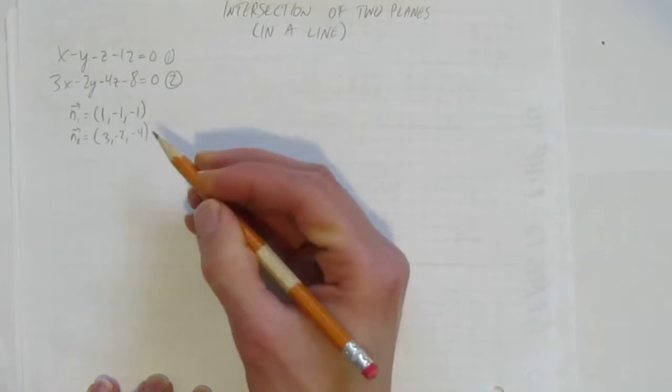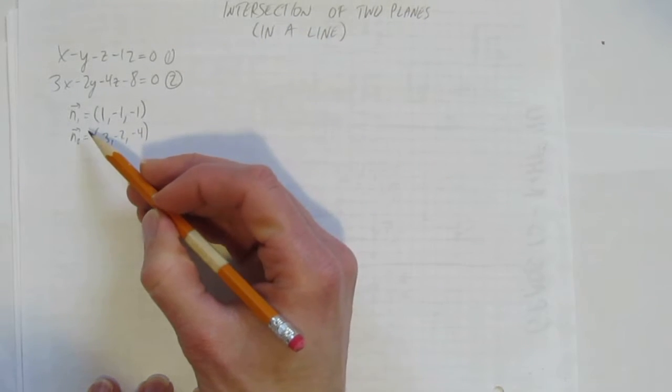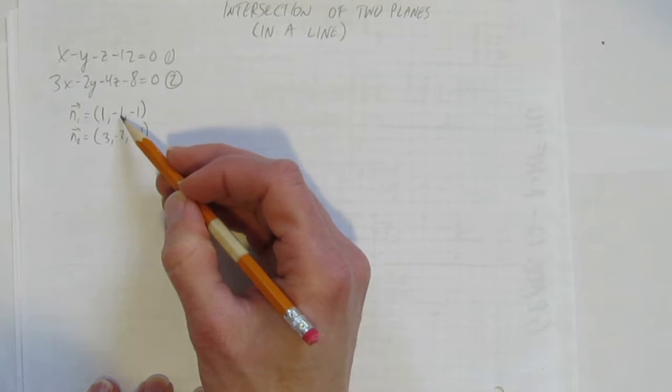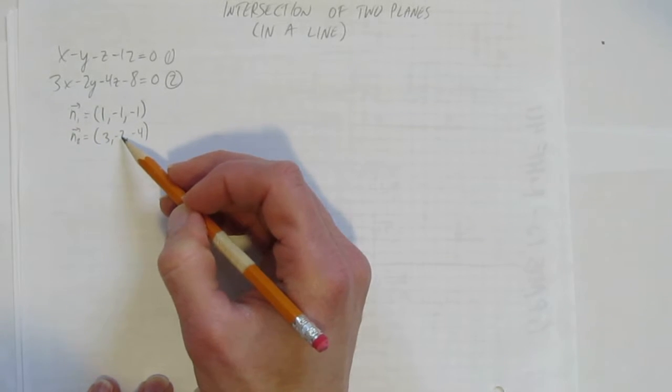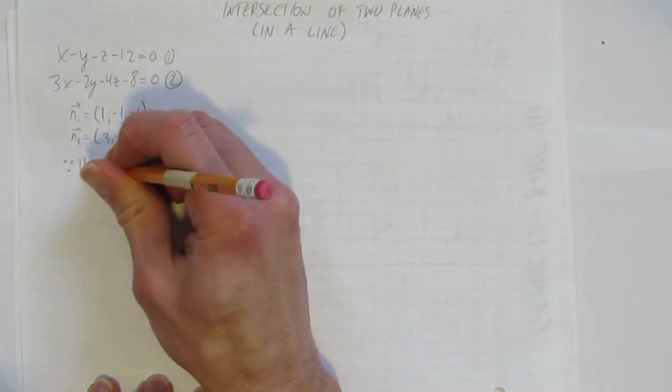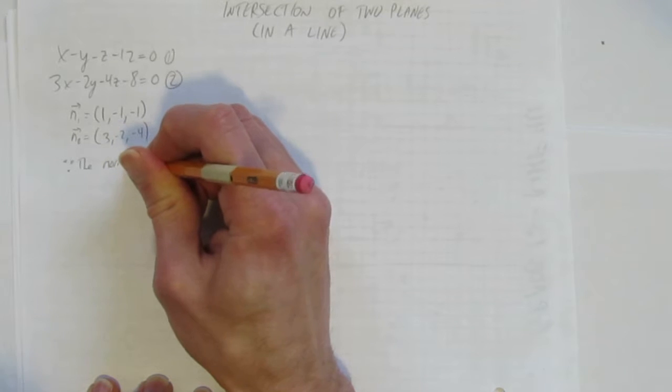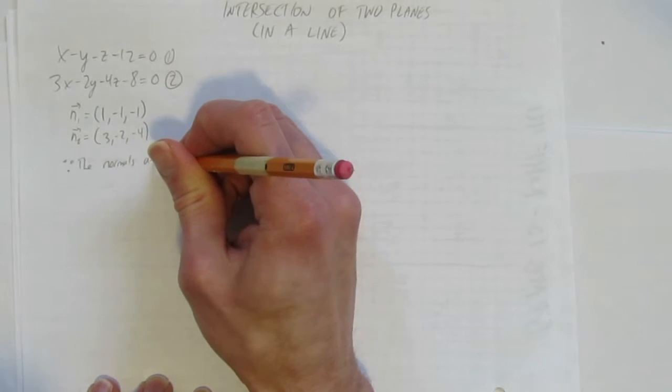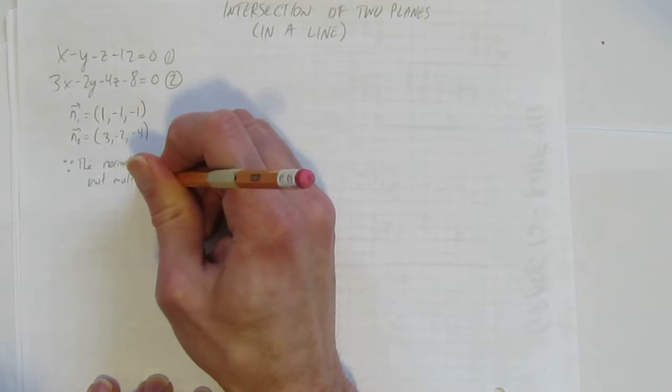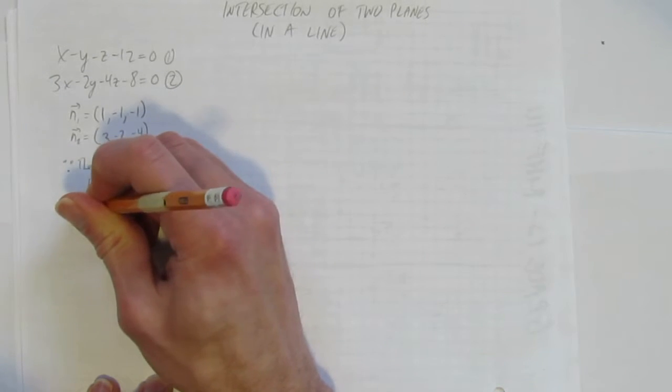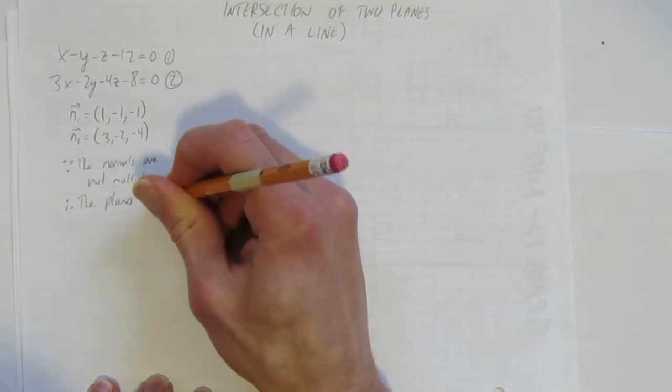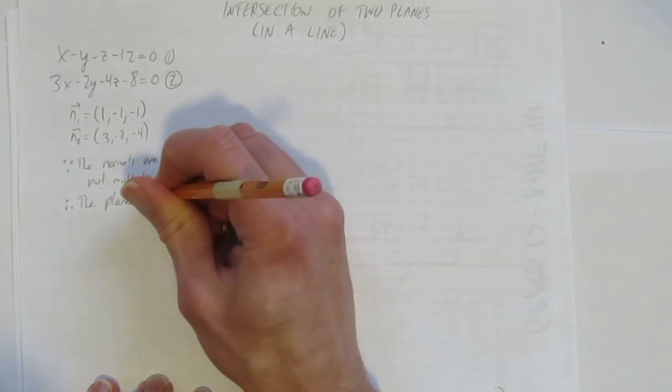Well clearly they're not multiples of each other, and I know this because if you go from 1 to 3, you multiply by 3. But when you multiply negative 1 by 3, you don't get negative 2, so it's over. Since the normals are not multiples, therefore the planes intersect at a line.